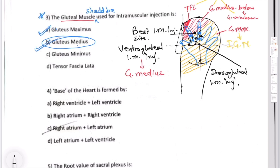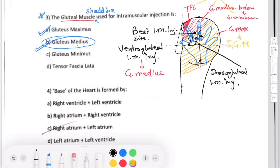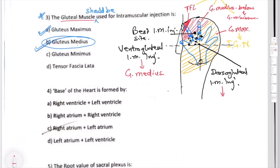When the injection is given in the superlateral quadrant without the hand-placement technique, this is called the dorsogluteal intramuscular injection. This injection goes into gluteus maximus. In this region, because there is sufficient fat, you can insert the full one-and-a-half inch needle at 90 degrees going deep inside.